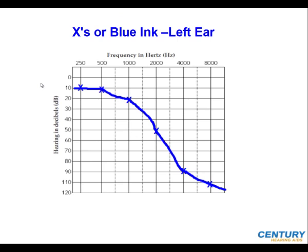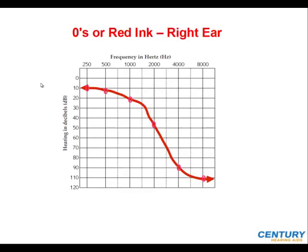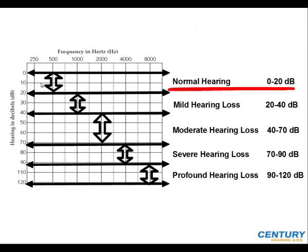You'll also notice that there are two lines — one's blue, one's red. The blue line with X's represents the hearing loss in your left ear, and the zeros or red line represents the hearing loss in your right ear. If you have an X or zero that's between zero and 20 decibels, you have normal hearing for that specific frequency.